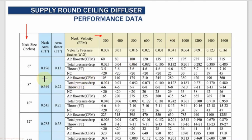For each neck size there is a sub-row. In this sub-row there is airflow in CFM, total pressure drop, total throw in feet, and NC level. From this sub-row, you need to select the CFM as per your requirement and NC level, then select the corresponding neck size at the corresponding neck velocity.